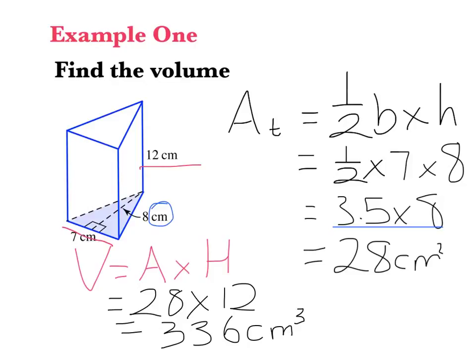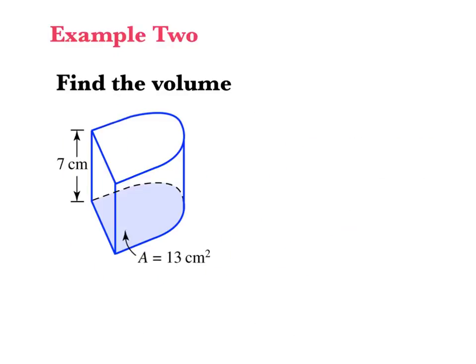The most important thing is that each unit of measure is the same — all in centimeters, so no conversion needed. First, check your units are the same. Second, calculate the area of the face of the cross section — in this case a triangle. Then multiply that area by the height. Volume equals area multiplied by height: 28 multiplied by 12 equals 336 centimeters cubed.